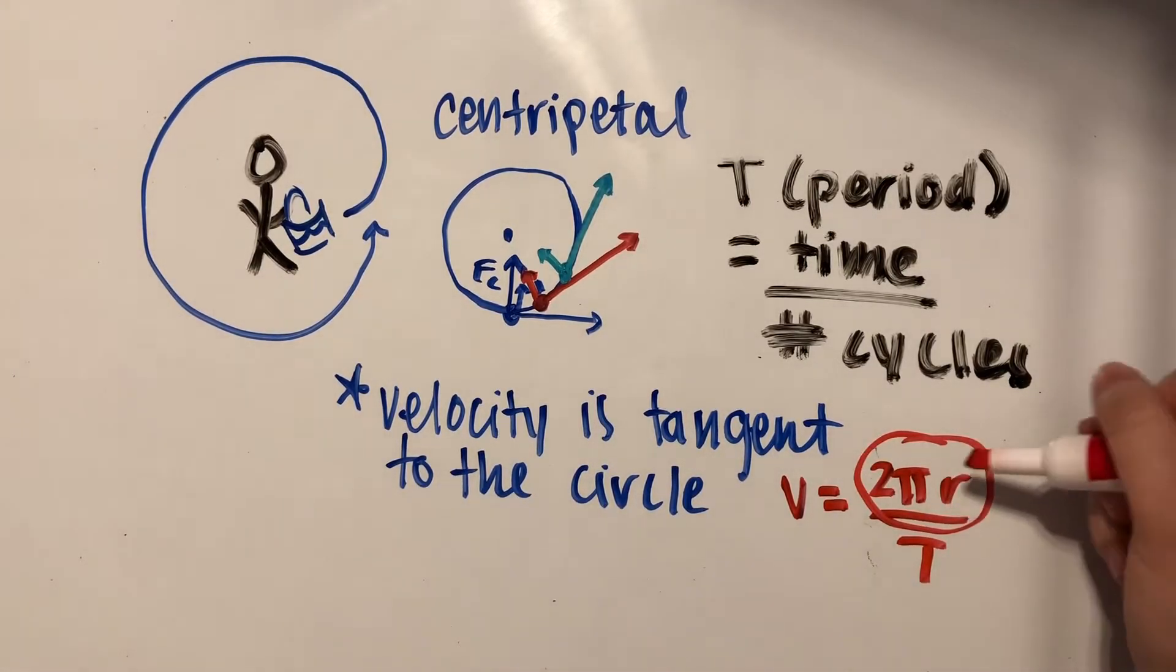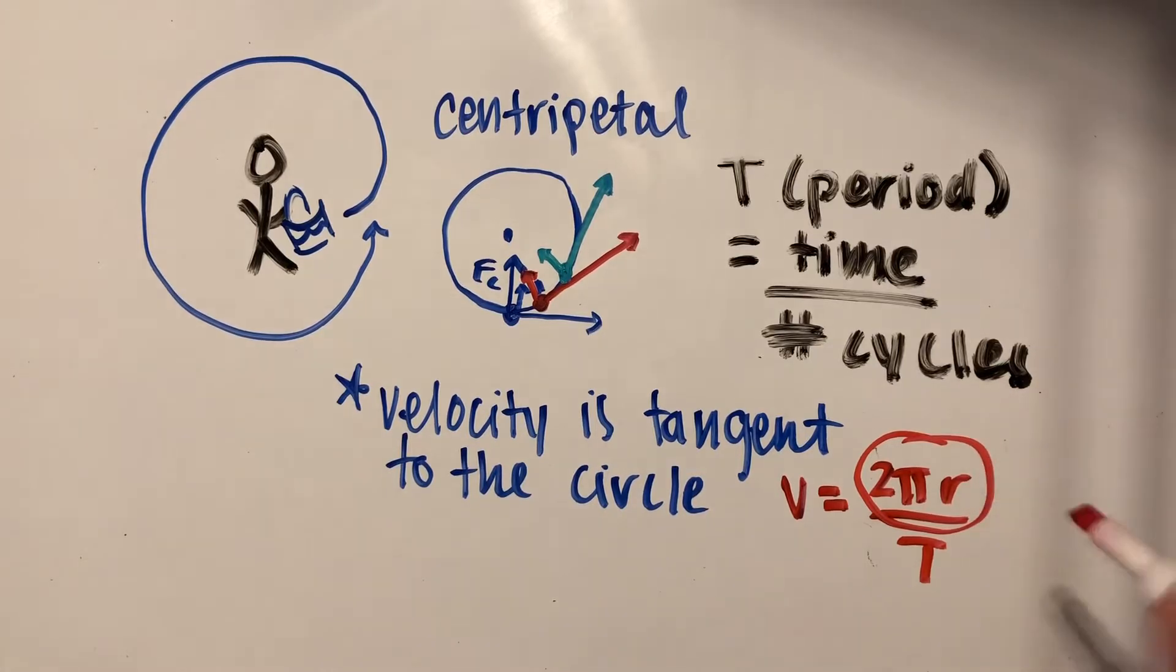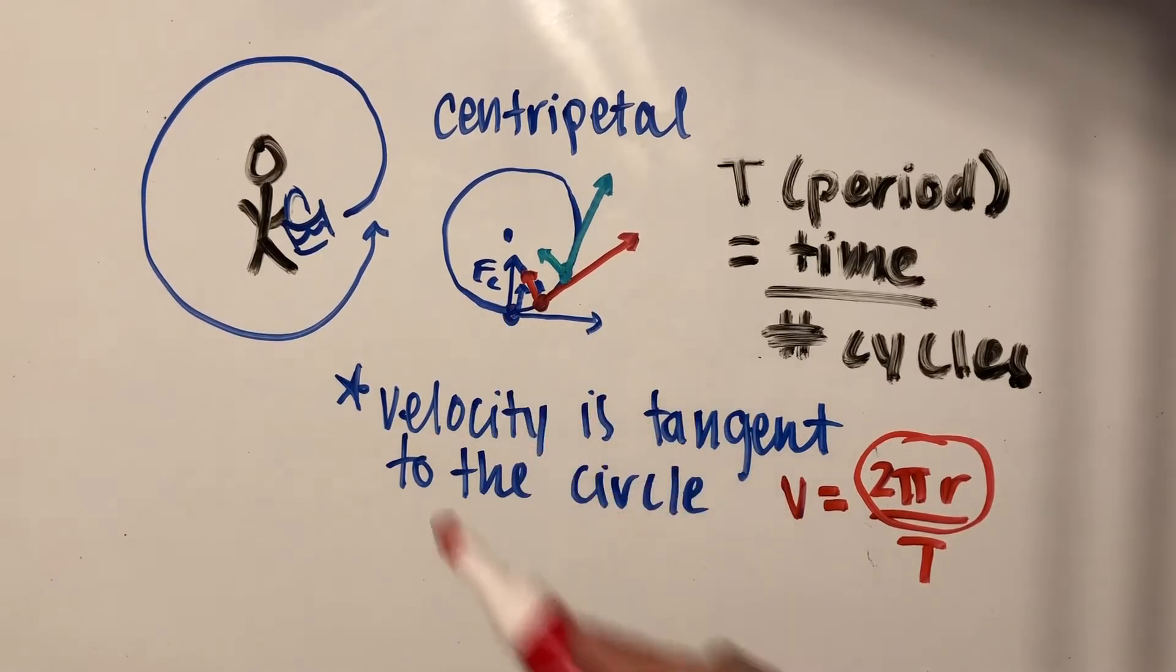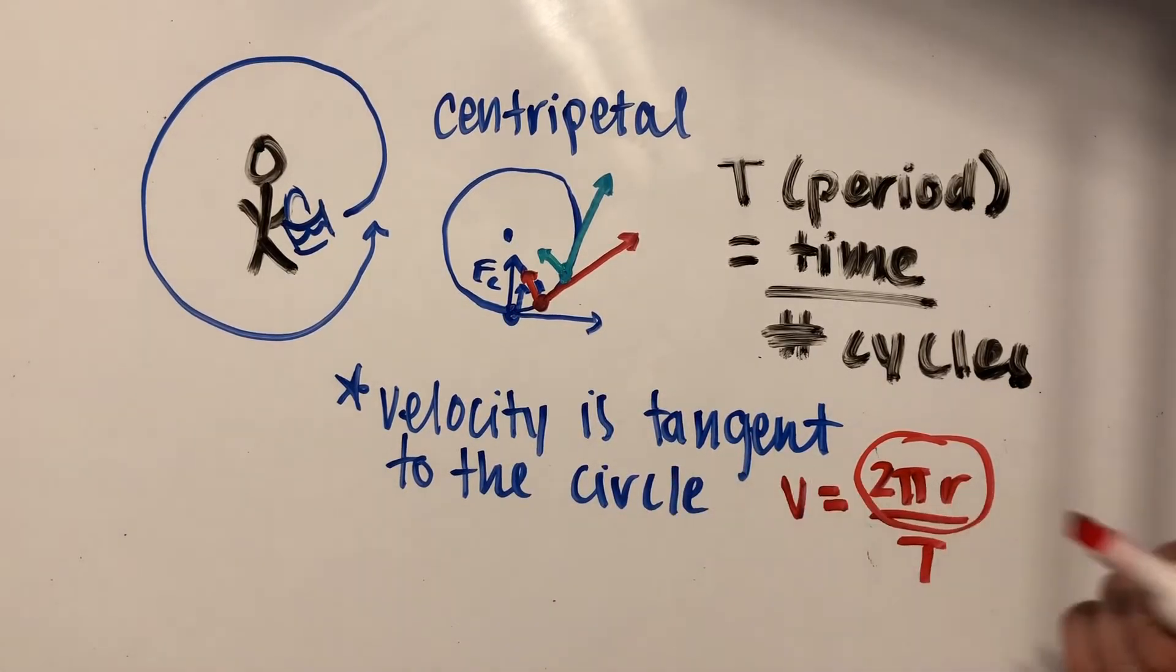If you remember from math, the circumference of a circle is equal to 2πr. If you take the circumference of this circle, that will give you the total distance that the object travels.